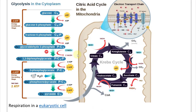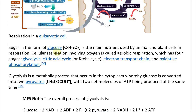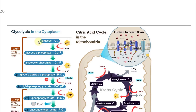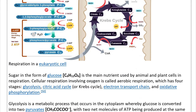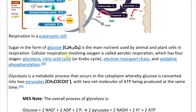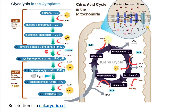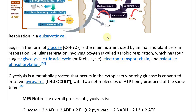Sugar in the form of glucose, C6H12O6, is the main nutrient used by animal and plant cells in respiration. Cellular respiration involving oxygen is called aerobic respiration, which has four stages: glycolysis, the citric acid cycle or Krebs cycle, the electron transport chain, and oxidative phosphorylation.